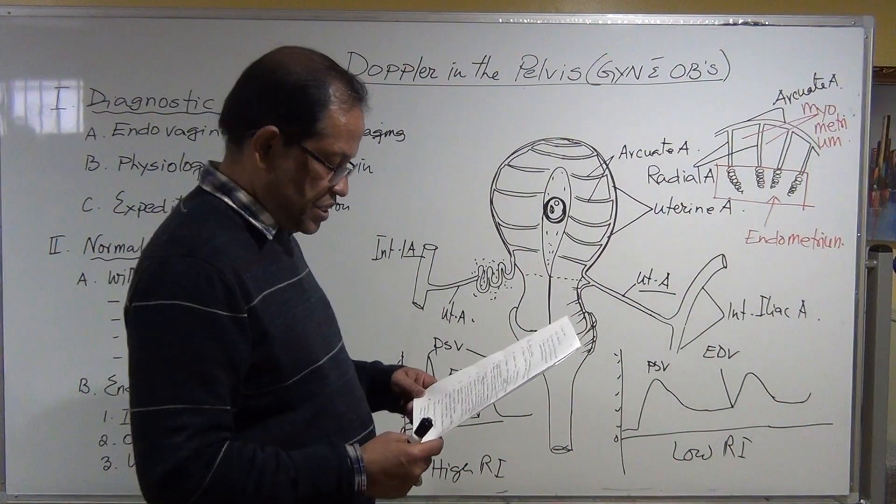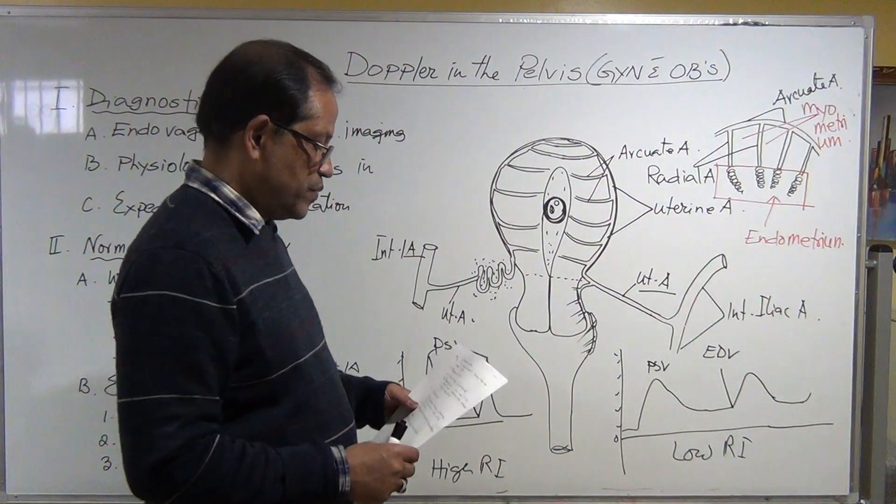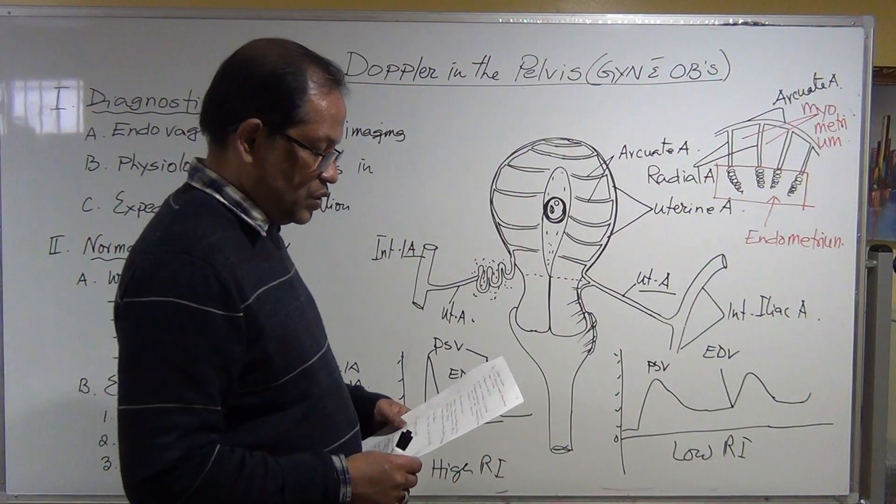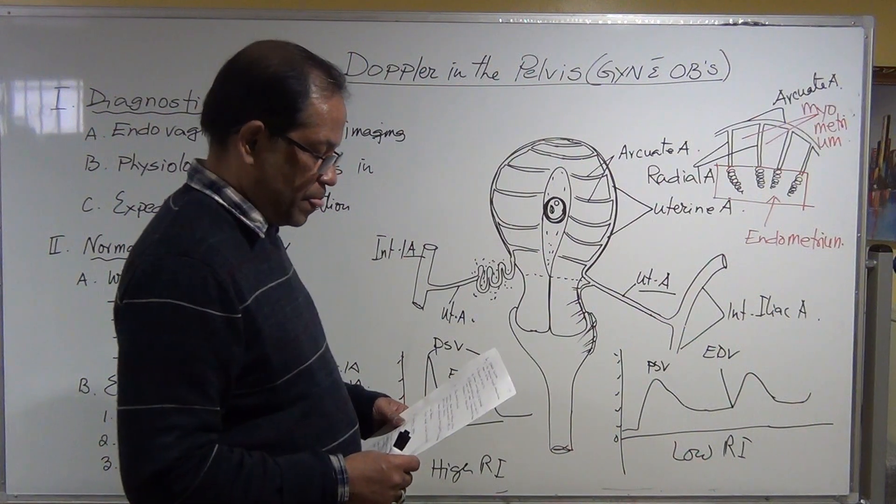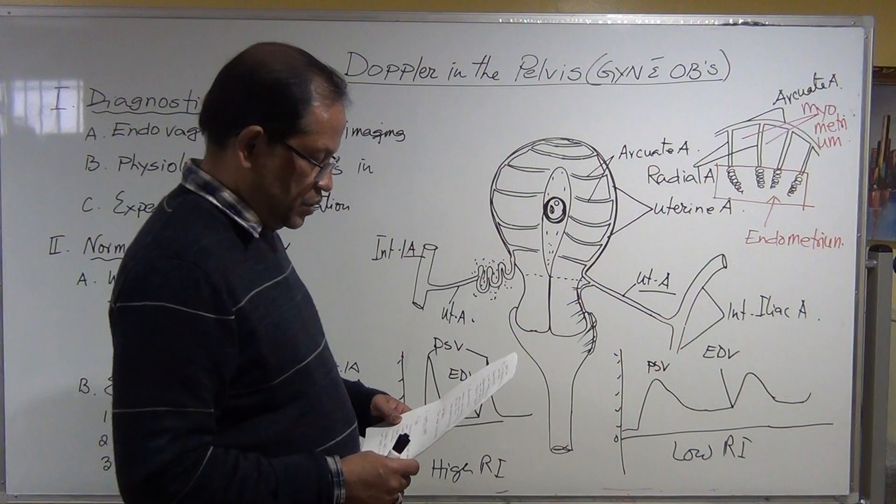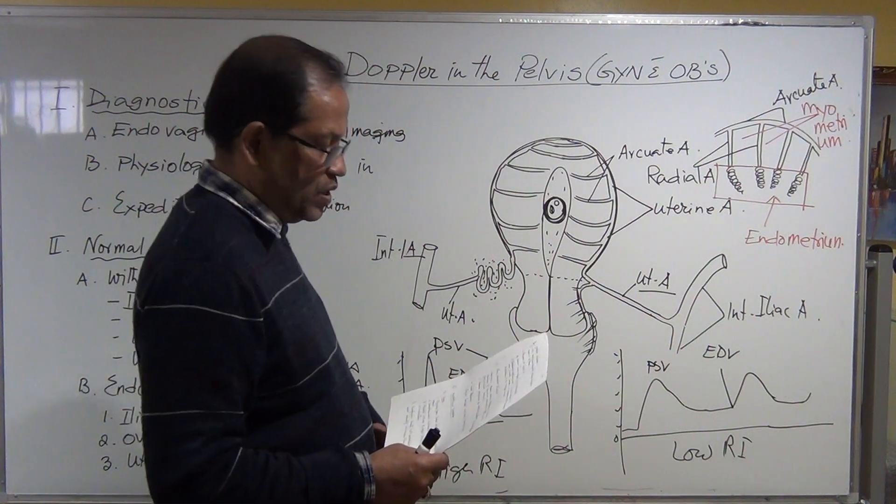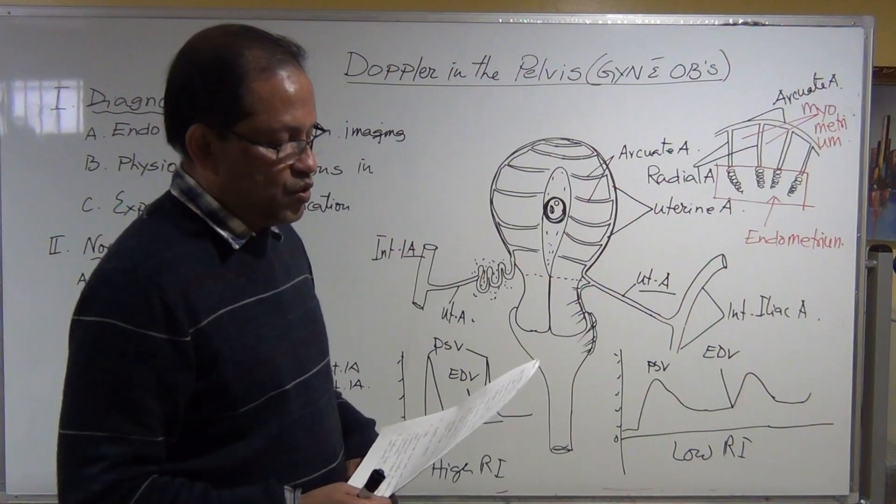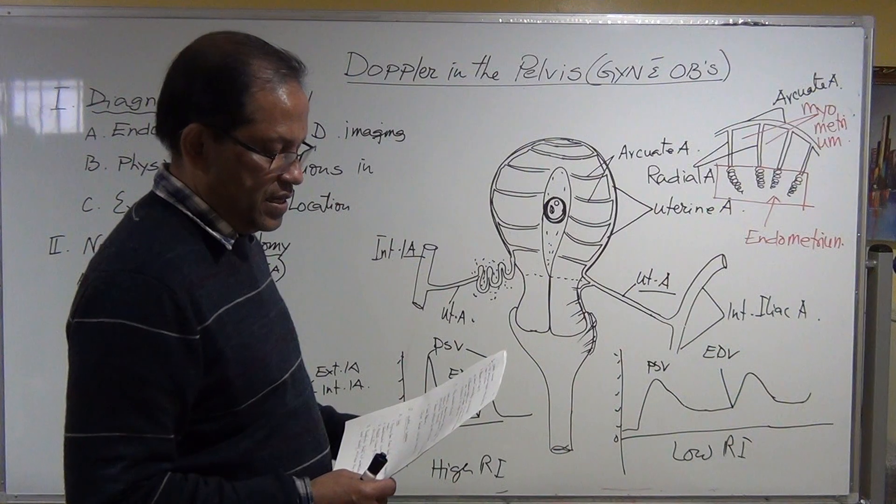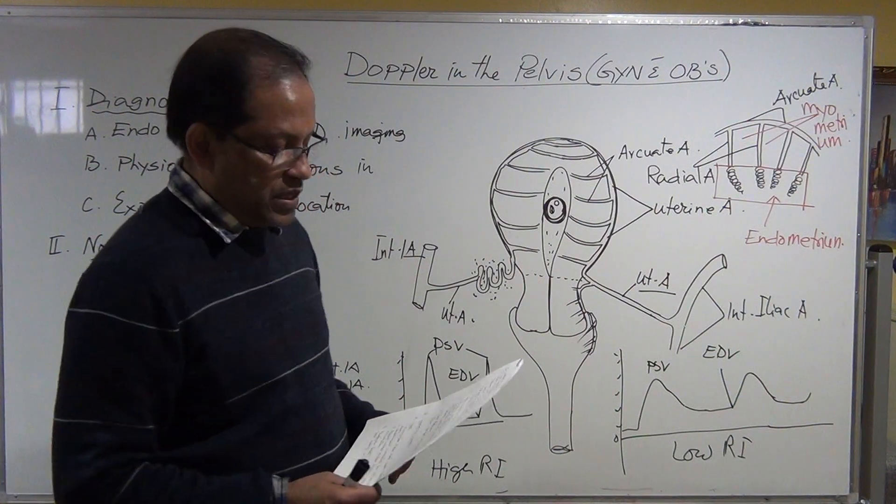Pelvic congestion syndrome, endometrial carcinoma, ovarian carcinoma, and other evaluative potential with the uterine perfusion and tubal patency. Those are the things you need to keep in your mind.